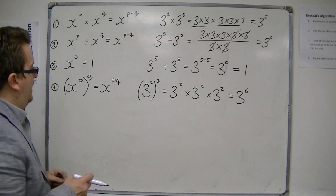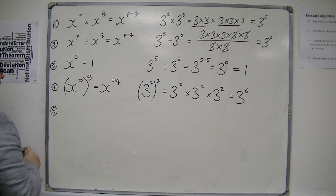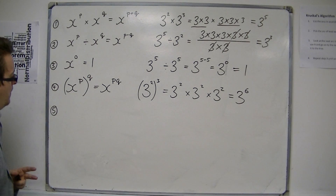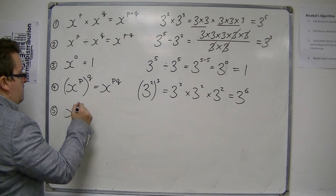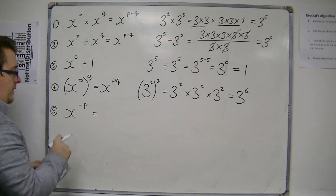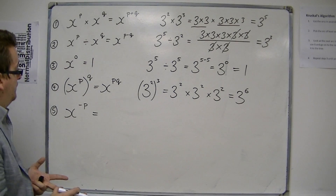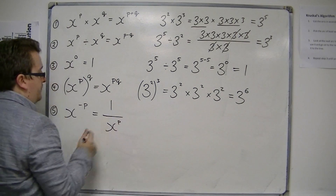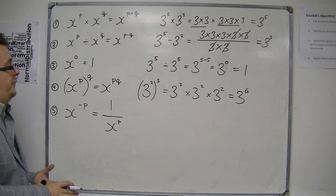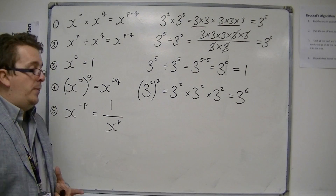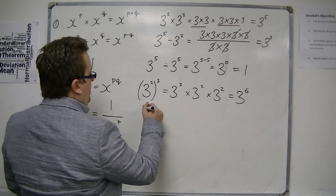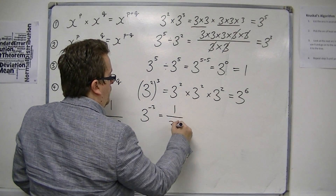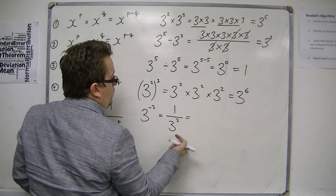So if you've got x to the minus p — a negative power — then this is 1 over x to the p. An example would be 3 to the minus 3, so that's 1 over 3 cubed, which would be 1 over 27.